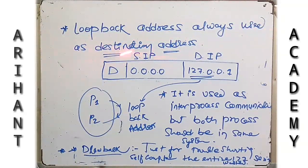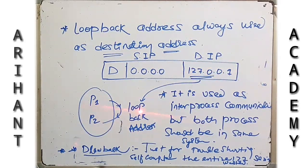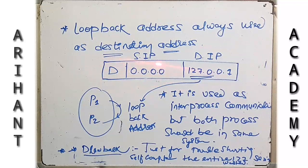The loopback address is always used as the destination address. Suppose this is a source IP and it wants to check whether it is connected to the network — we will place the loopback address into the destination IP. We use the 127 series for loopback address purpose: 127.0.0.1. Suppose we want to check whether P1 is connected to the network system — since it is not assigned any IP, we put 0.0.0.0 as the default source IP, and in the destination IP we place the loopback address.